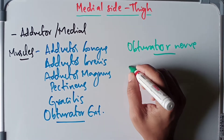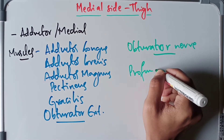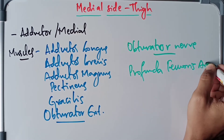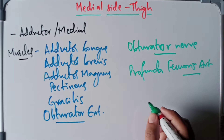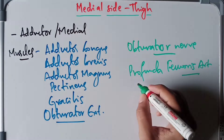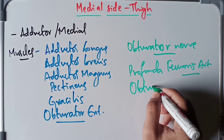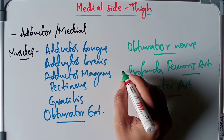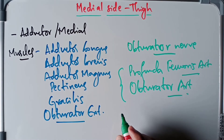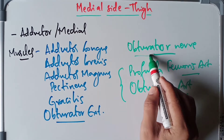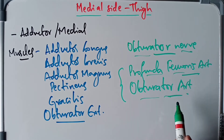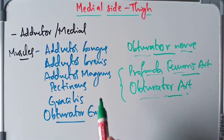When it comes to the arteries, we have the profunda femoris artery, which is the largest branch of the femoral artery, and also the obturator artery. These two arteries supply the medial side of the thigh.